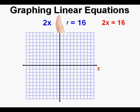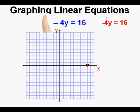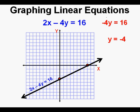First, we cover the y-term with our thumb so that 2x equals 16 remains. Solving for x, we divide by 2, so x equals 8. We mark the x-intercept at x equals 8 along the x-axis. Now we cover the x-term and we have negative 4y equals 16. We find the y-intercept by dividing both sides by negative 4, so 16 divided by negative 4 is negative 4. We mark the y-intercept at y equals negative 4, then draw the line through the two points. This is the graph of 2x minus 4y equals 16.